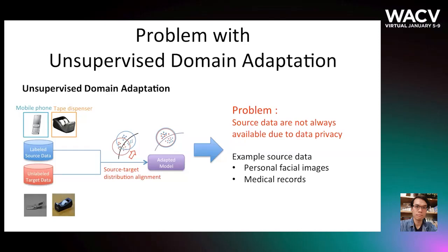In traditional UDA, both labeled source data and unlabeled target data are available during adaptation. In real-world applications, however, the source data are not always available due to emerging regulation on data privacy. Examples of such source data include personal facial images, medical records, etc.